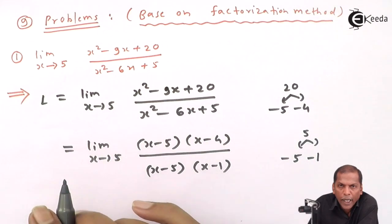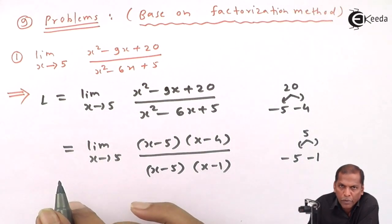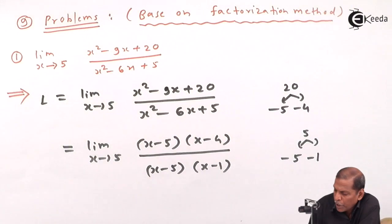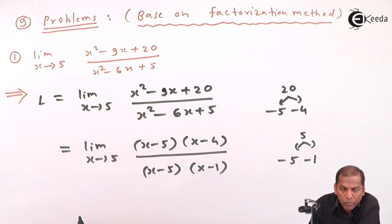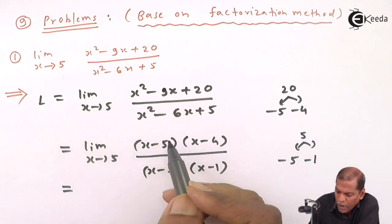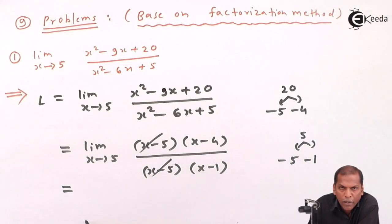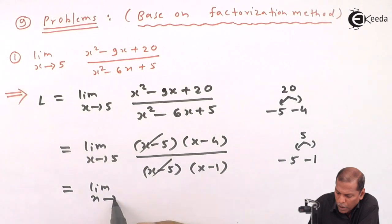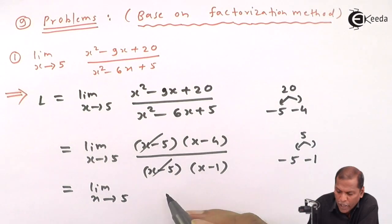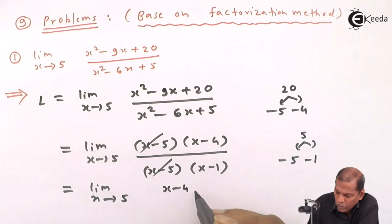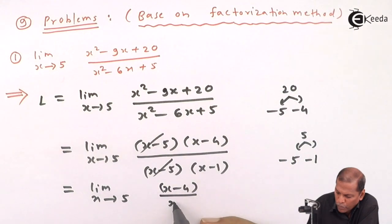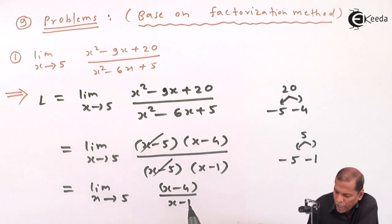In the denominator, now if we observe, the factor (x - 5) we can cancel from numerator and denominator. So the next step gives us limit as x approaches 5 of (x - 4)/(x - 1).